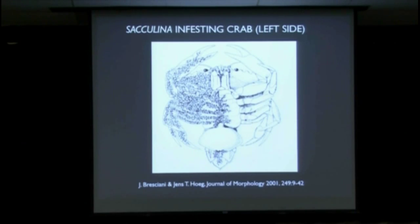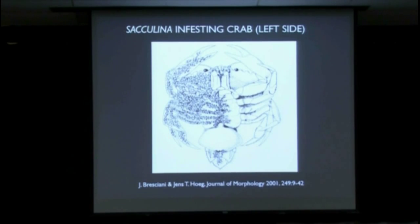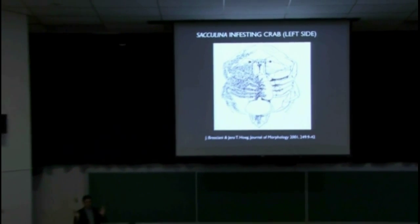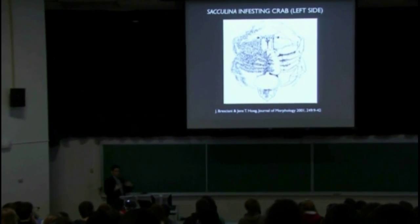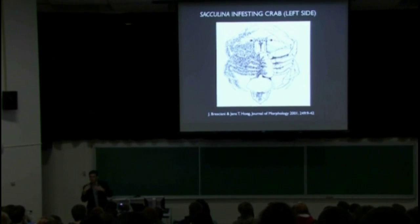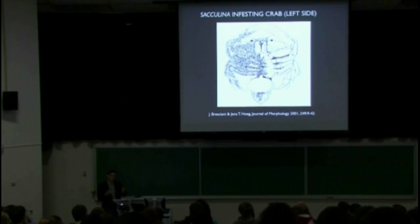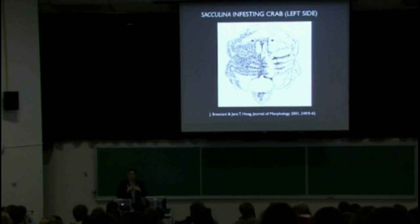In Europe and here in the United States, a lot of the crabs are infected with sacculina or relatives of sacculina — they're all over the place. The crab will go about its business eating snails or what have you, the food goes into the crab, and then the parasite eats some of that food.